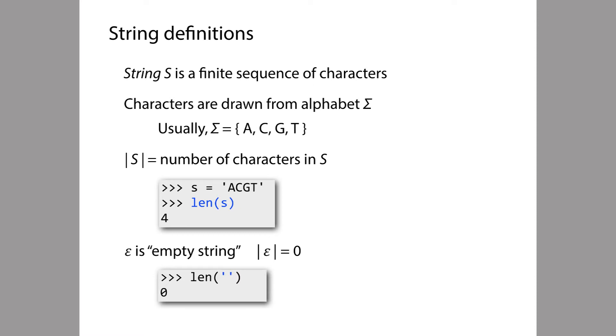We'll use the symbol epsilon to represent the empty string, the string that has length 0. In Python, in order to represent the empty string, you simply use two quotes one after the other, two quotes with nothing in between them.